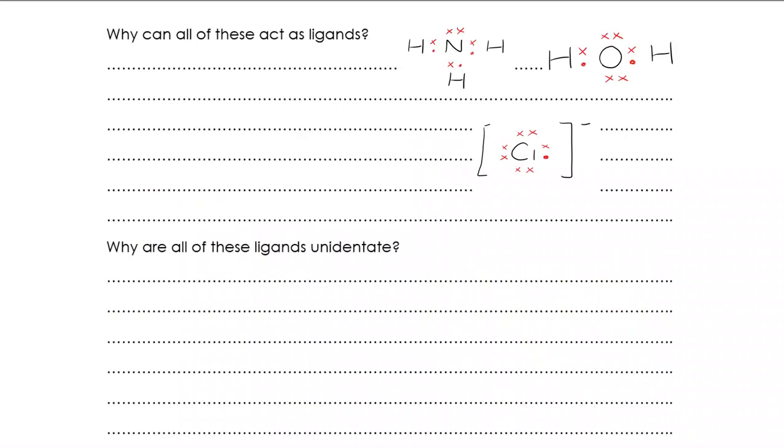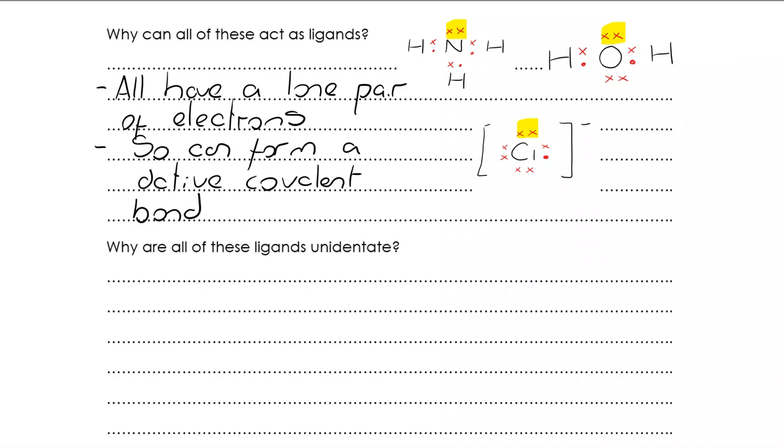So if we move on to this question: what is it about these that can act as ligands? What we're really looking at here is they all contain lone pairs. That means they can all provide lone pairs to produce a dative covalent bond. That's precisely what we're looking at with ligands when they form dative covalent bonds with transition metal ions at the centre of complexes. So they all have a lone pair of electrons. They can all form a dative covalent bond where they are the donors of both electrons. Maybe pause. Why are they all unidentate?